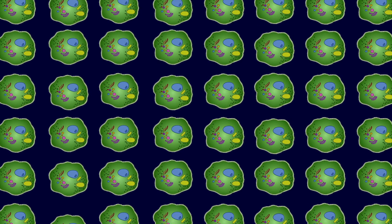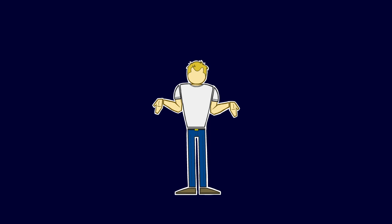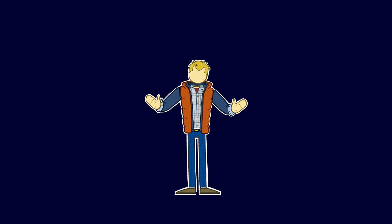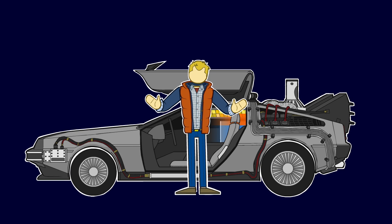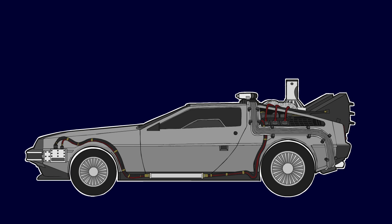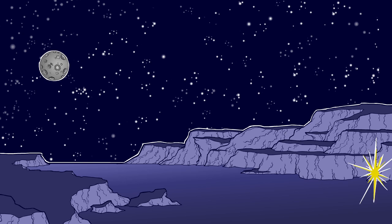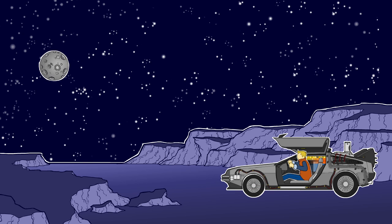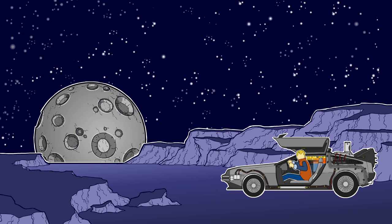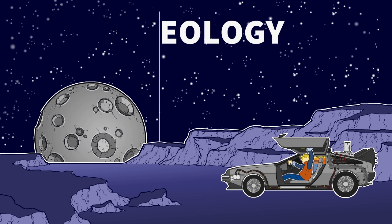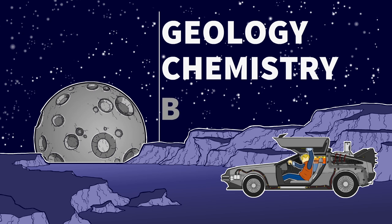But when did it first start to occur on Earth? To find out, we need to go back four billion years to the early Earth. When the Earth first formed, it looked nothing like it does today. The moon was much closer, there was no water, and most importantly there was no life. There was geology, there was chemistry, but there was no biology.